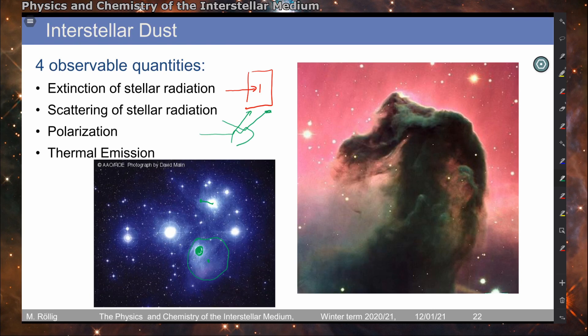We also observe polarization. Dust particles are able to polarize radiation either by selective absorption or by emission by themselves. We can also observe the actual black body radiation — the thermal emission of dust particles, which are solid bodies. So we can observe thermal emission.